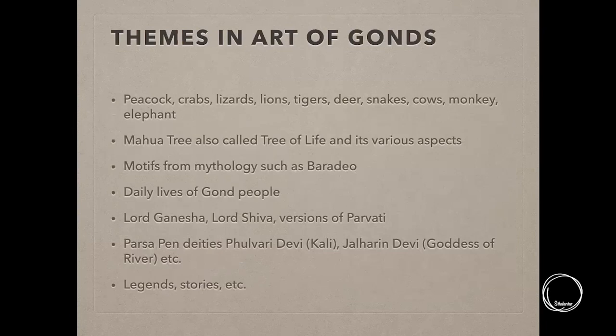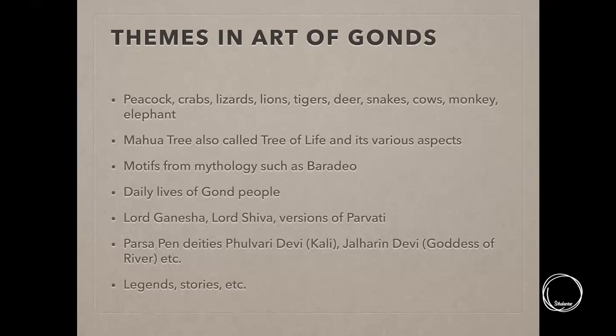The main motifs include animal motifs — peacocks, crabs, and various other animals. The tree of life — in this context represented by the Mahua tree — plays a very important role among the Gond community. In daily life the Mahua tree is a very important source: you can make oil from it, alcohol, use it for medicine, vegetables, and much more. That is why the Mahua tree holds such great significance in Gond society.